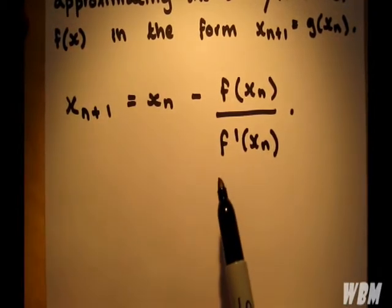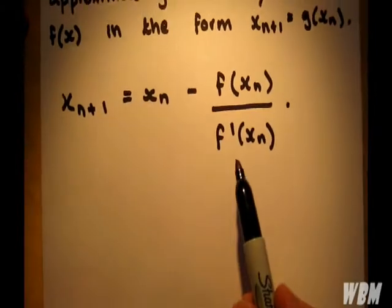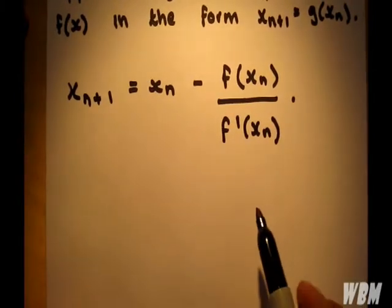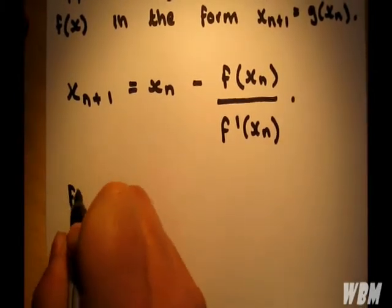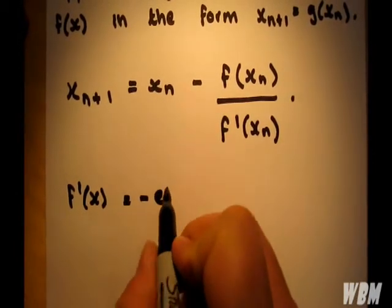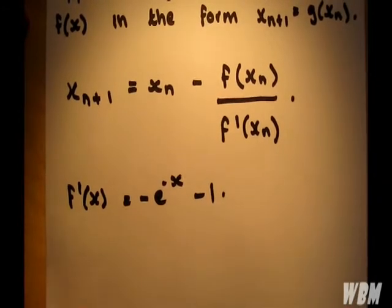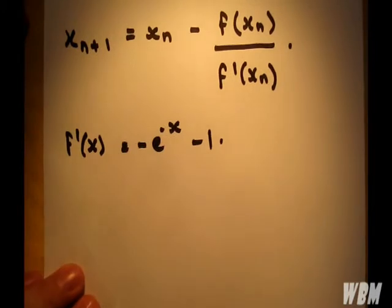Now, the first step is going to be to differentiate the function given. Here we have f'(x) = -e^(-x) - 1. And therefore, we have our answer.